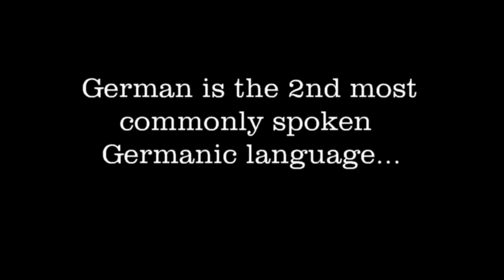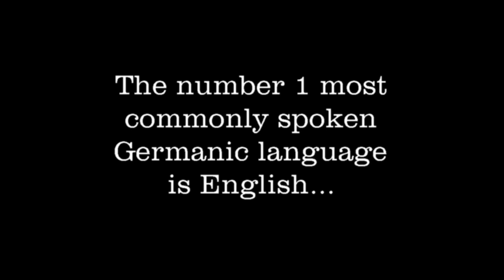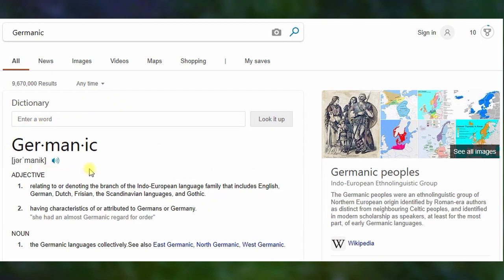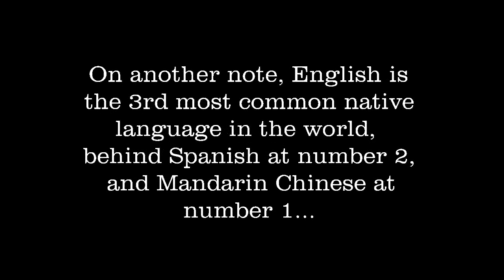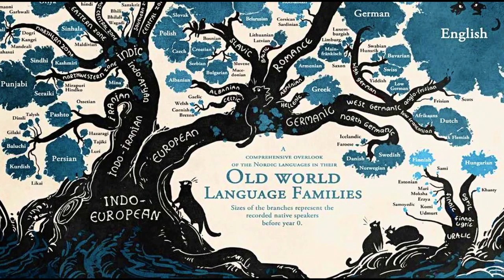German is the second most commonly spoken Germanic language, because the number one most commonly spoken Germanic language is English. Germanic has to do with Germany, or of Germany, and both languages are closely related linguistic siblings. English is the third most common native language in the world, behind Spanish at number two and Mandarin Chinese at number one.